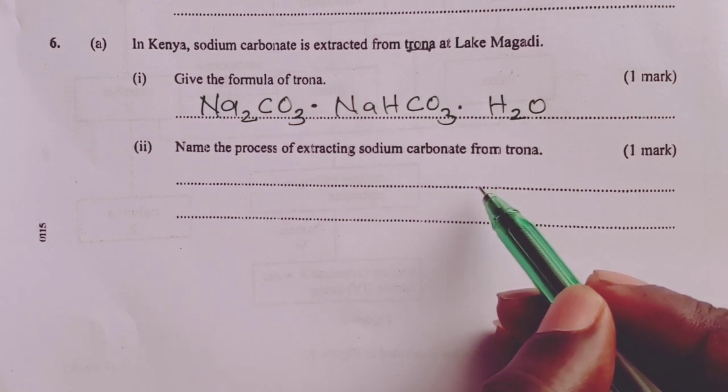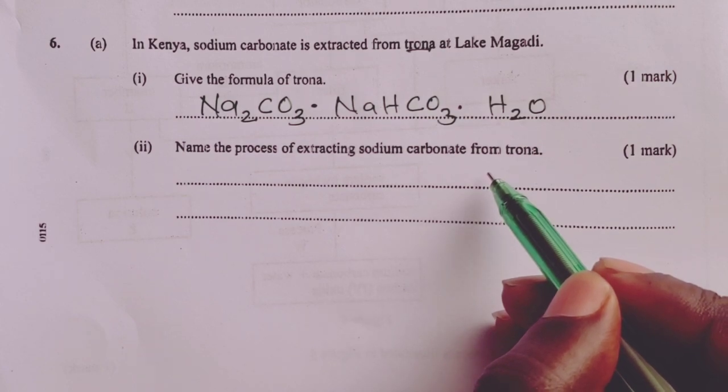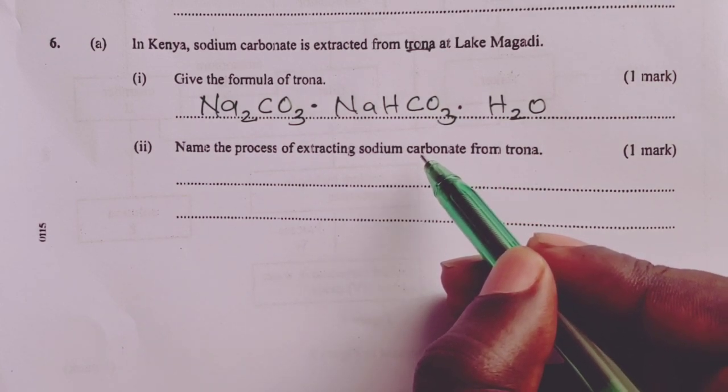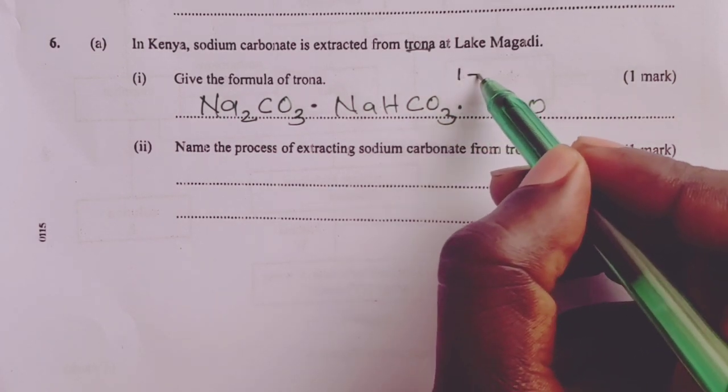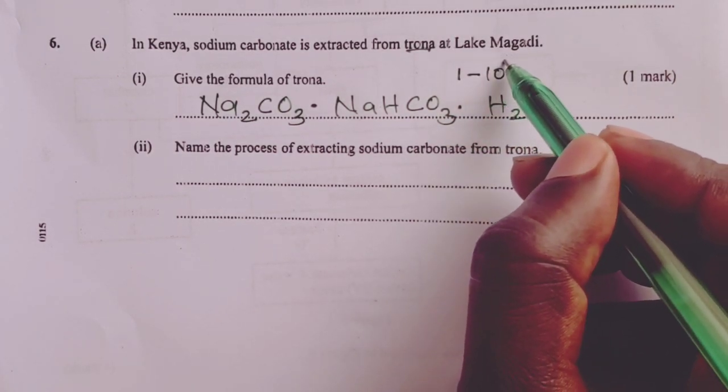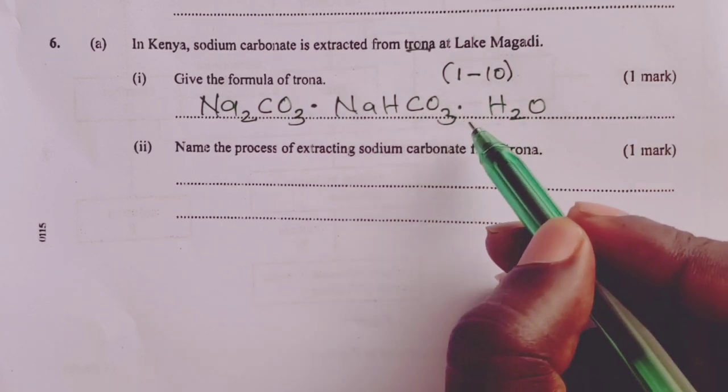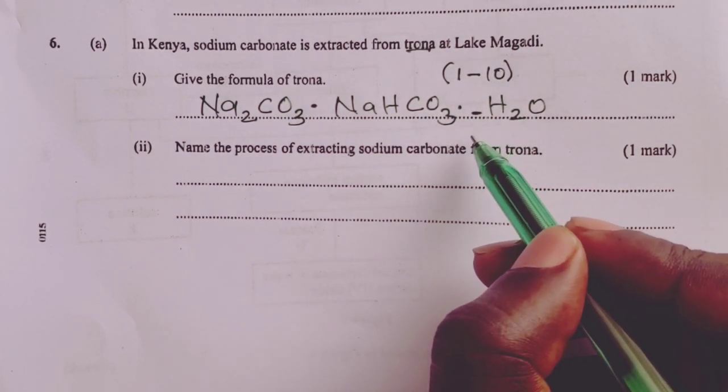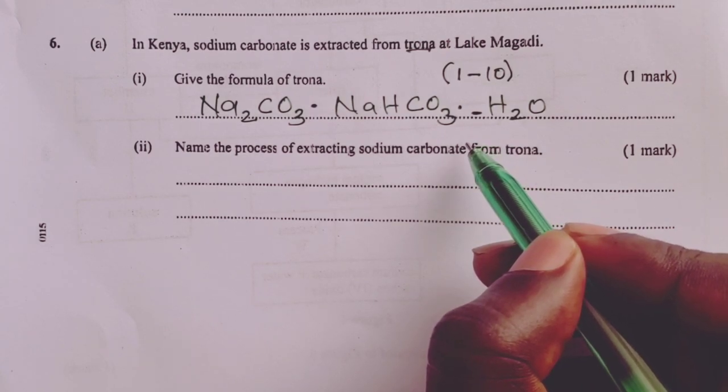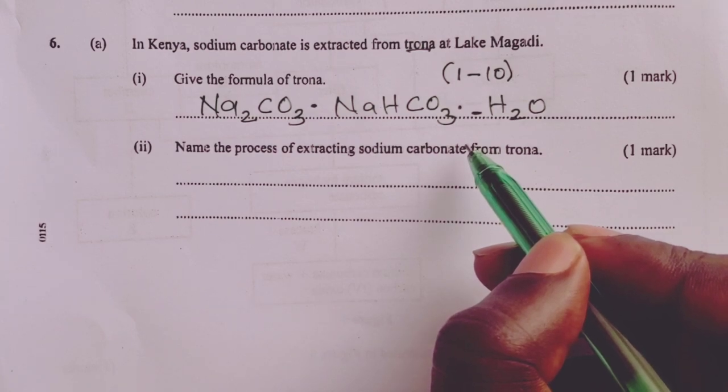The examiner allowed the number of moles of water of crystallization to range between 1 to 10. So any candidate who had a value here between 1 to 10 would score the mark on the formula of trona.